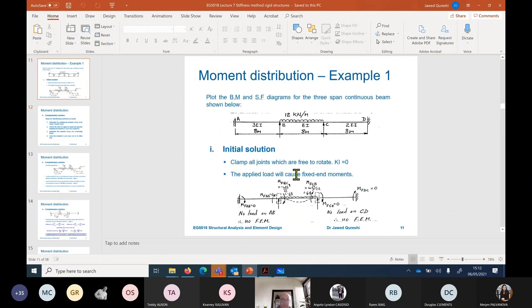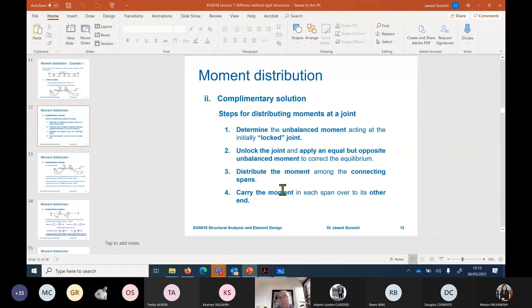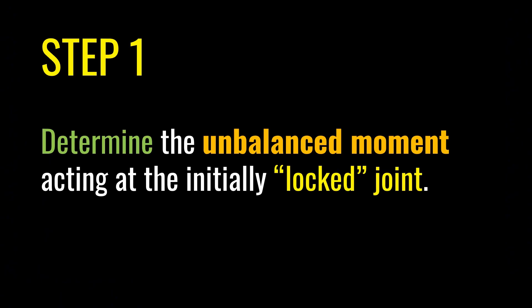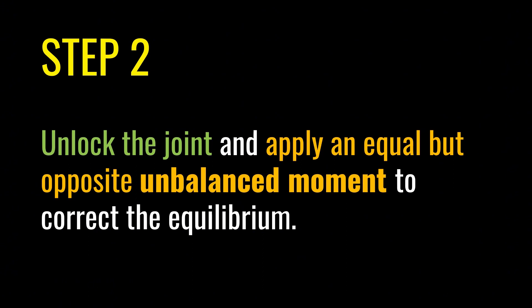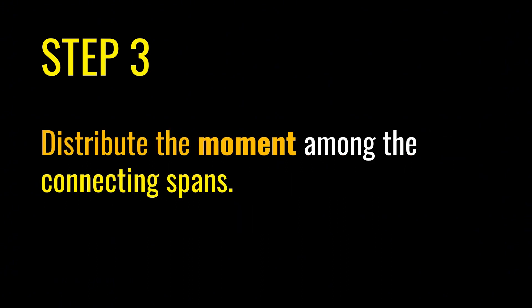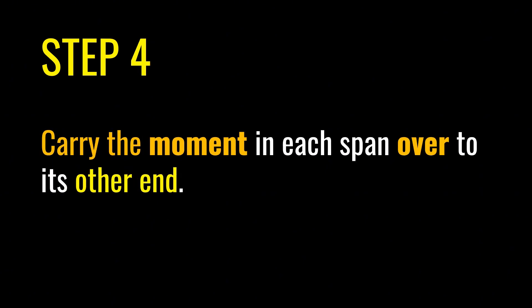I want you to remember two things: first is the initial solution and then we have the complementary solution. What we did to solve the moment distribution method is we clamped the joints — kinematic indeterminacy is zero, meaning no degree of freedom, everything is fixed. Applied loads cause fixed end moments. Then in the complementary solution there are four steps: determine the unbalanced moment at the locked joint, unlock the joint and apply equal and opposite moment.